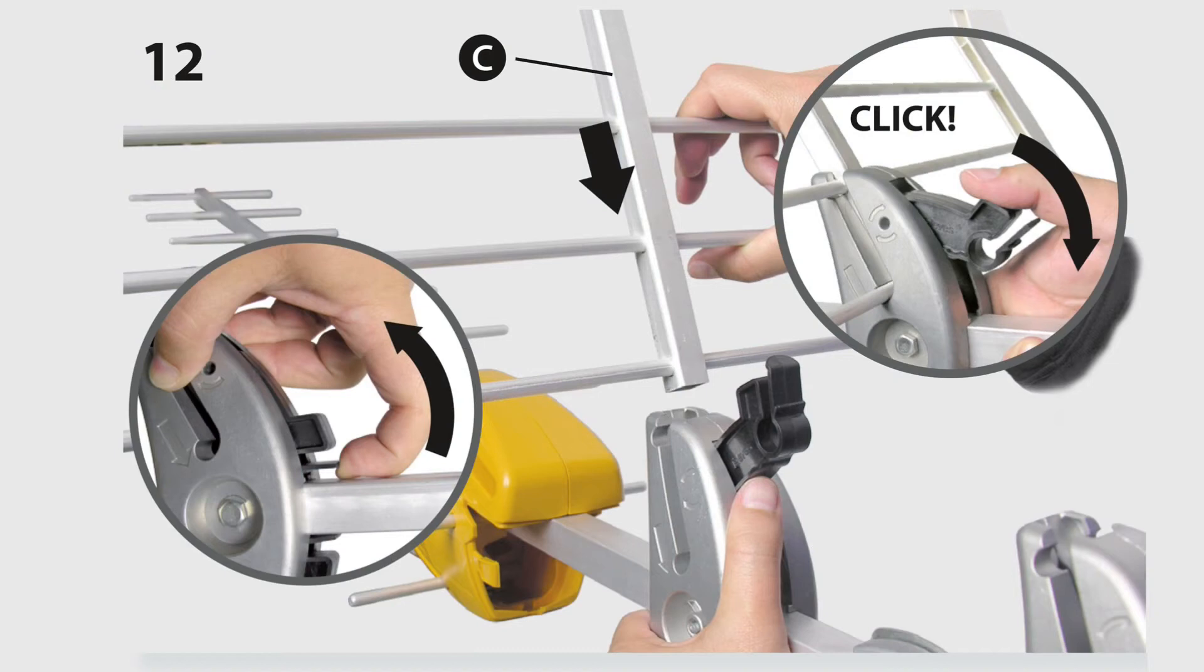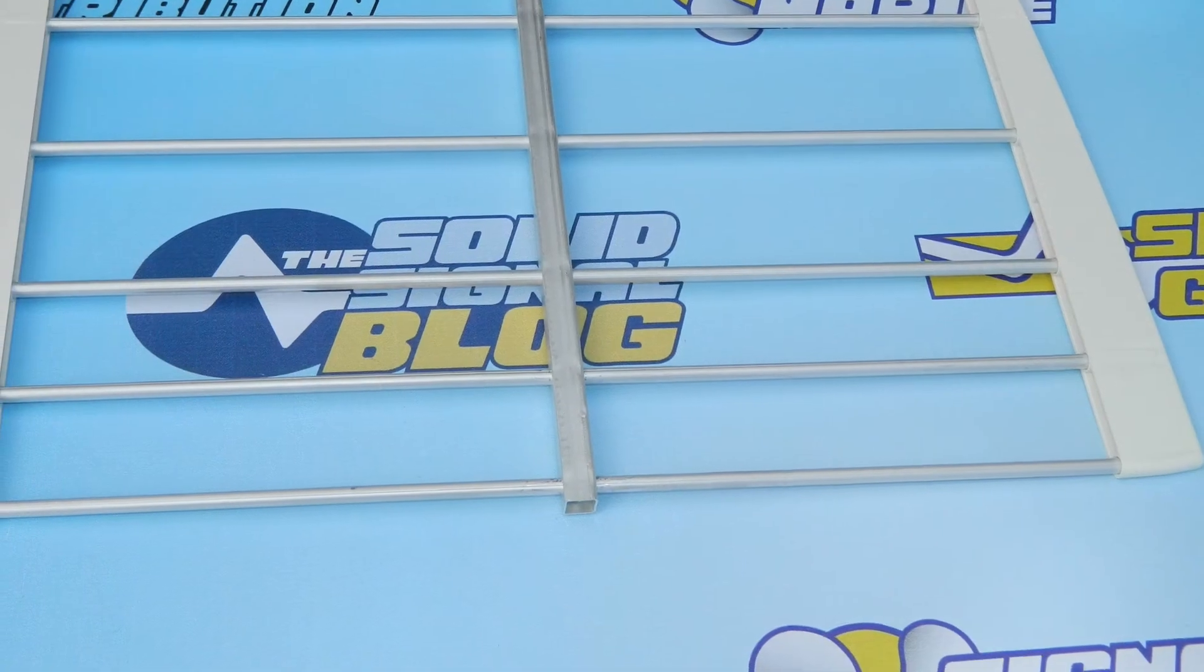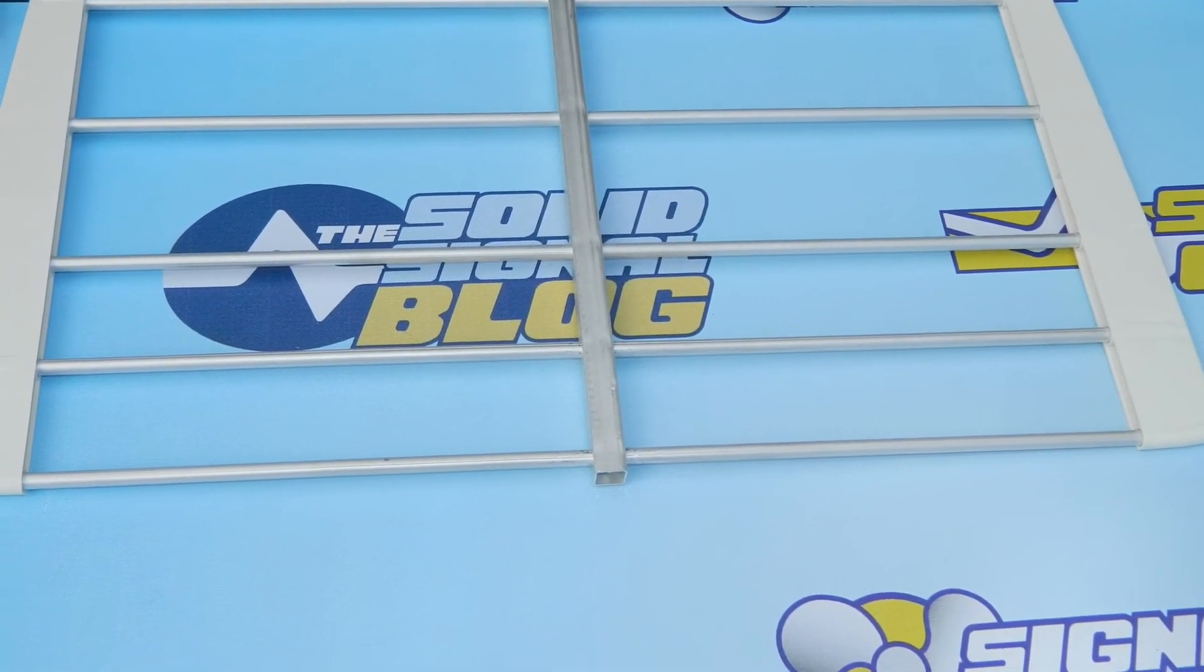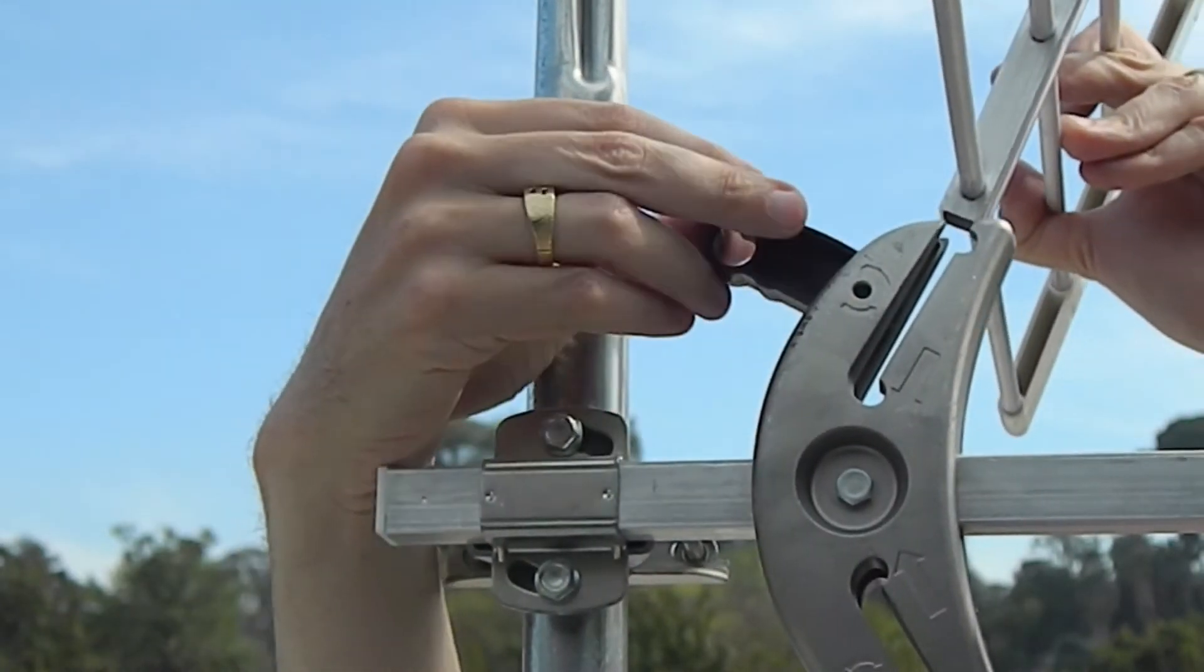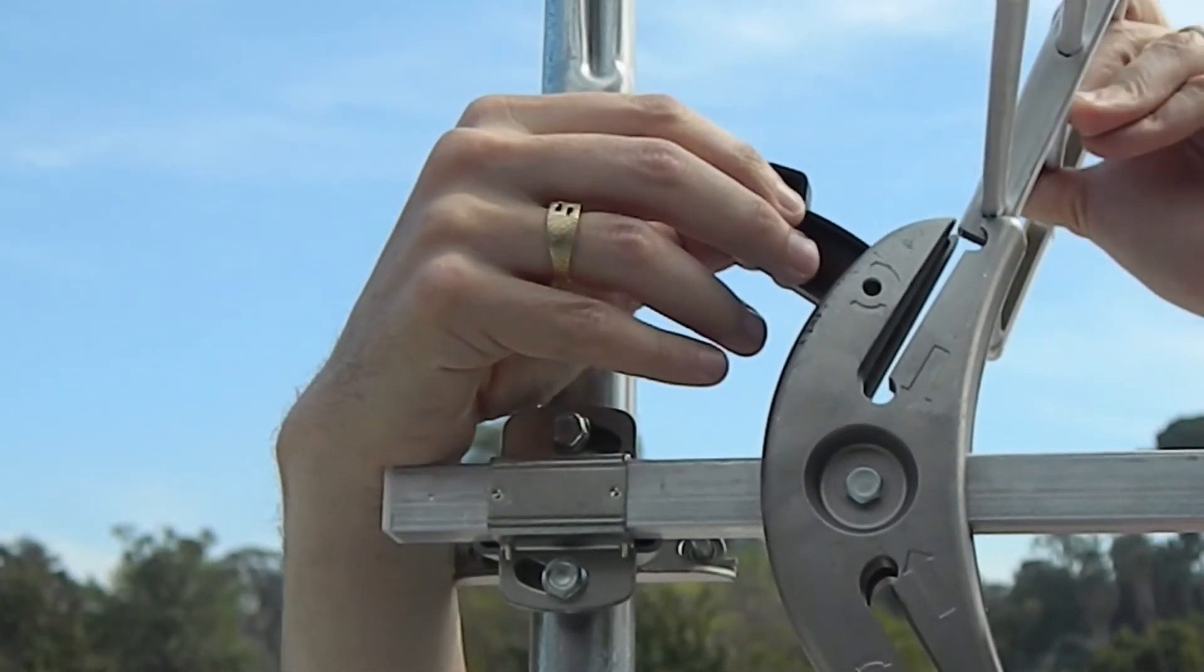In this step, you're going to be attaching those large reflector panels. If you take a look, you'll notice the two of the bars are closer than the rest of the bars. Those are the ones that are closest to the center of the antenna. If you do it right, you should be able to just slide them in.